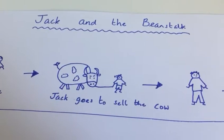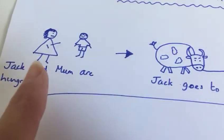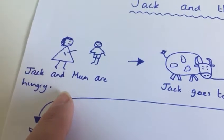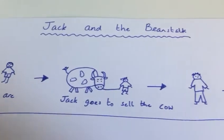So I've done the title Jack and the Beanstalk, and I've started at the beginning of the story with Jack and his mum. They're hungry and his mum says you must go and sell the cow.